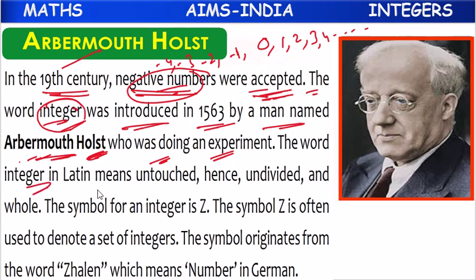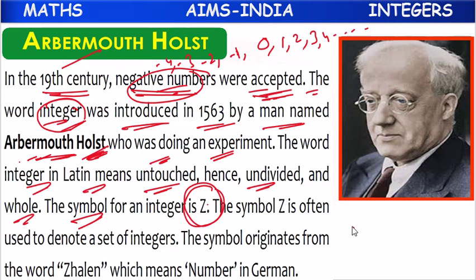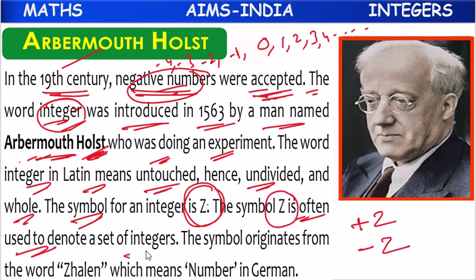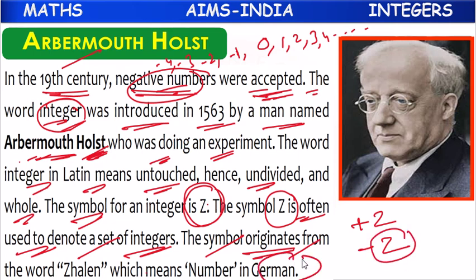The word 'integer' in Latin means 'untouched,' or 'undivided,' or 'whole' — it has many meanings. The symbol for integers is Z. Positive integers are denoted with plus Z, and negative integers are denoted with minus Z. The symbol Z is often used to denote the set of integers, and it originates from the German word 'Zahlen,' which means 'number.'